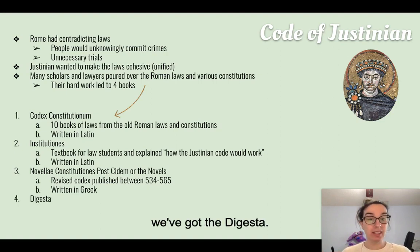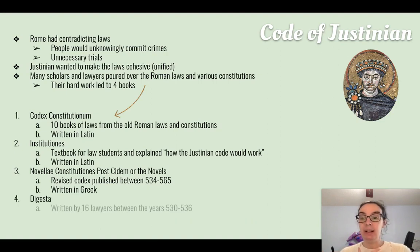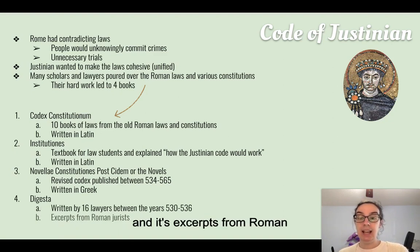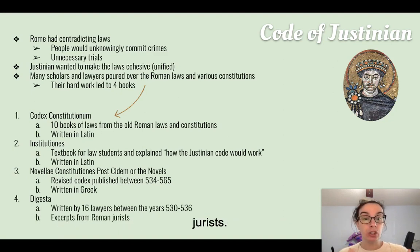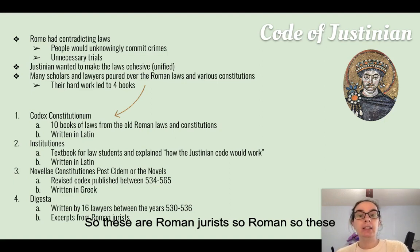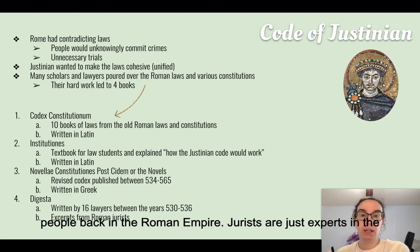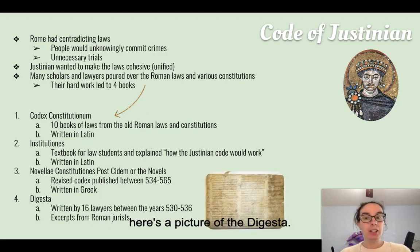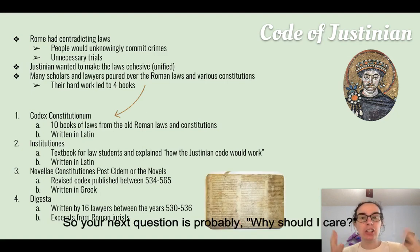The fourth book is the Digesta, written by 16 lawyers between the years 530 and 536. It contains excerpts from Roman jurists — experts in the law from back in the Roman Empire. Here's a picture of the Digesta.